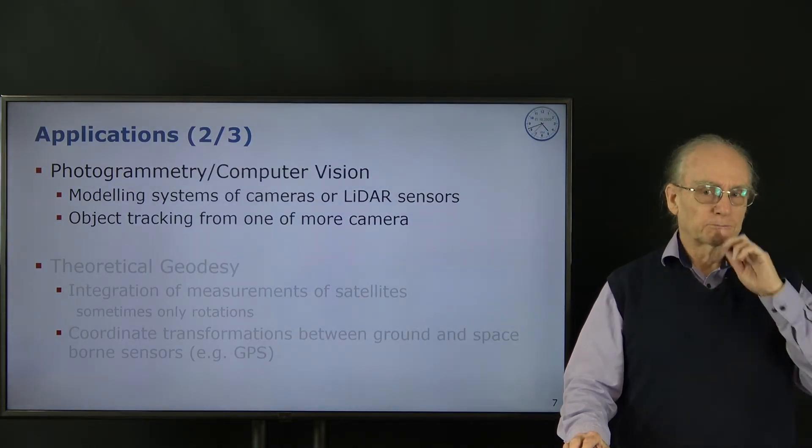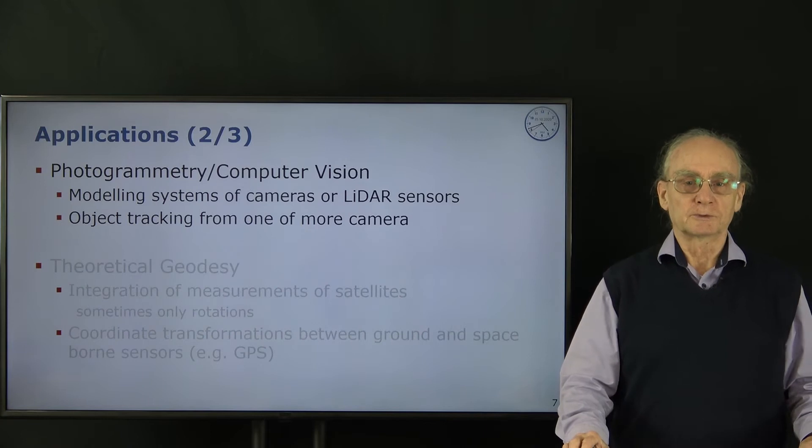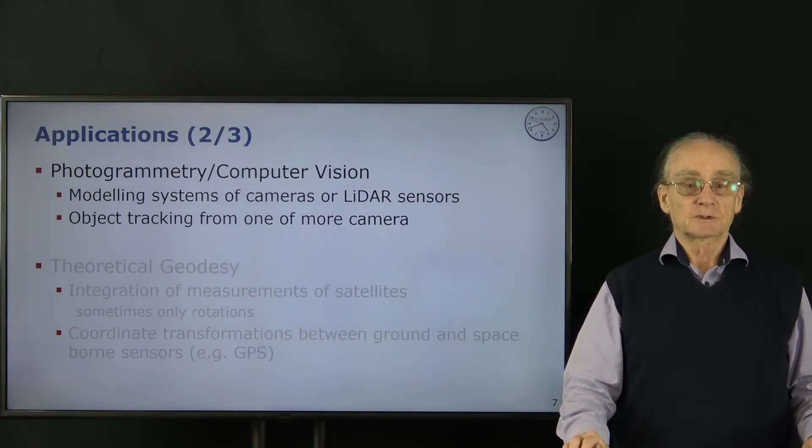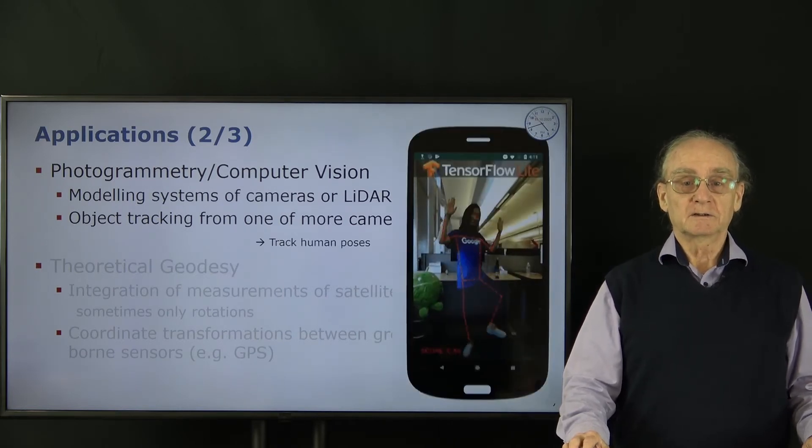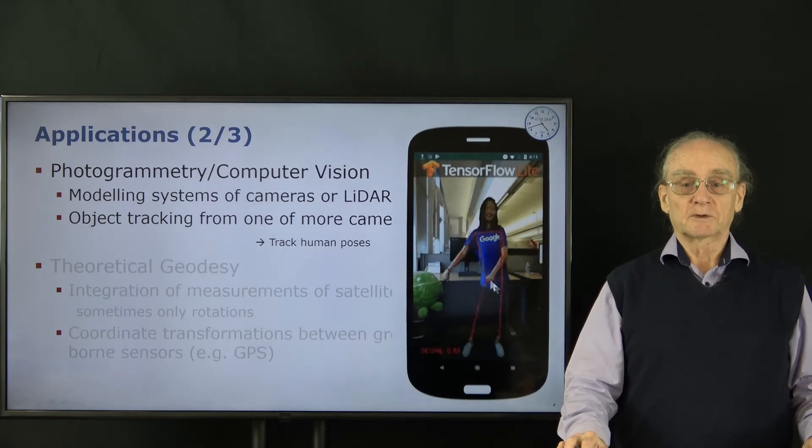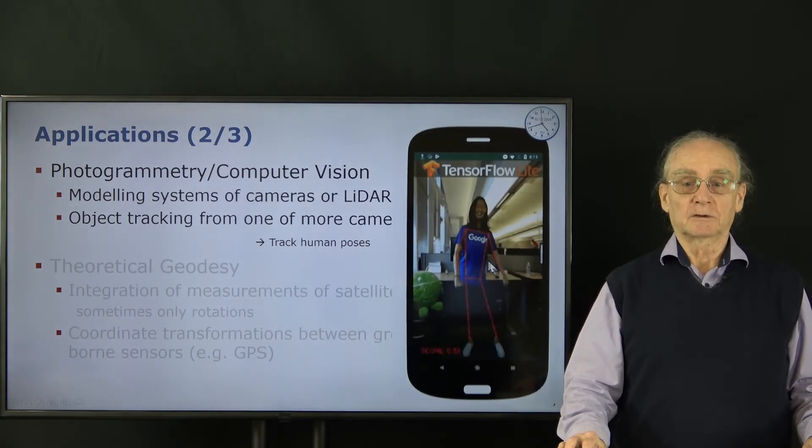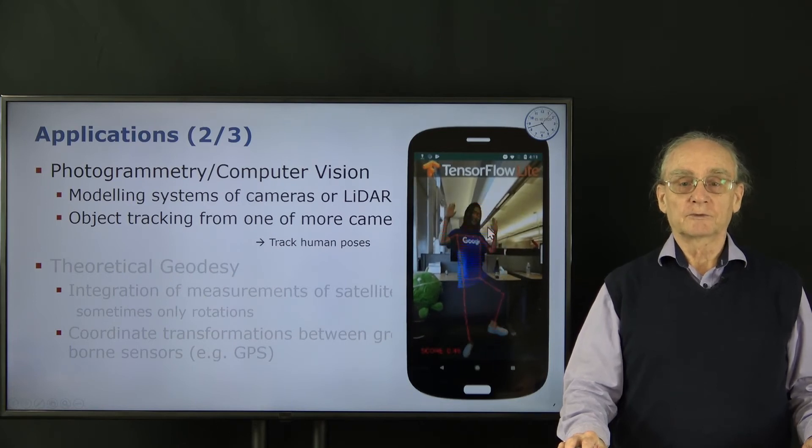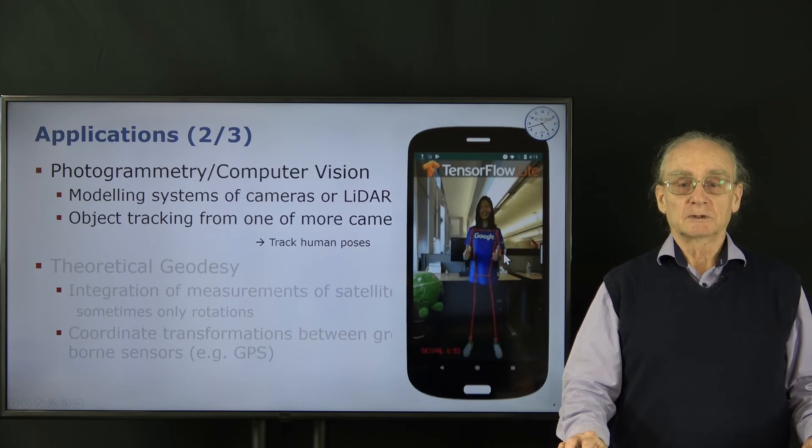We also have problems in photogrammetry or computer vision. We have to model systems of cameras or LiDAR systems as we saw, but we also would like to do object tracking from more cameras. For instance here we might be interested in observing a person and tracking it and finding out how it moves. You see here the mobile phone and the video taken by the mobile phone using a neural network procedure to actually estimate the position of the different limbs of this woman.